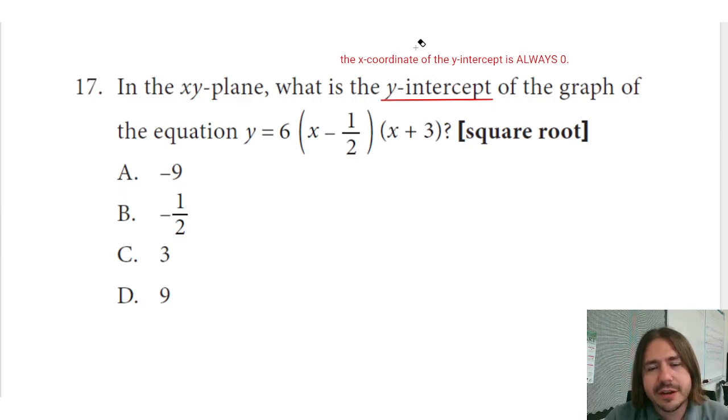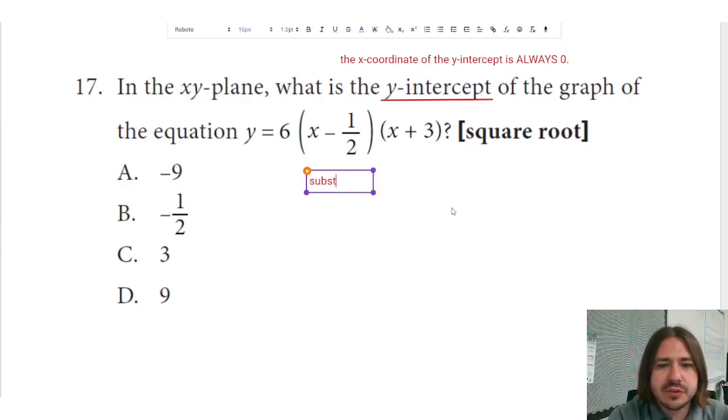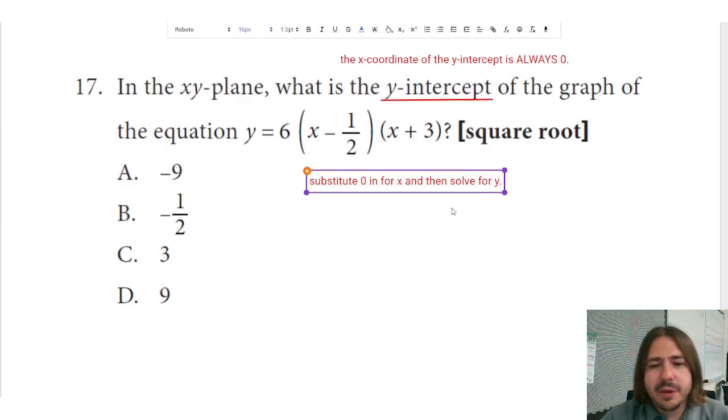All you have to do is recognize that the x-coordinate has to be 0. So the strategy for finding the y-intercept is going to be to substitute 0 in for x and then evaluate, or I'll just say solve for y, even though there's not really too much solving going on here. You're just going to evaluate.